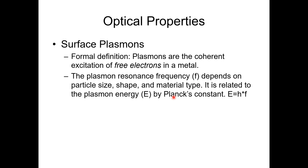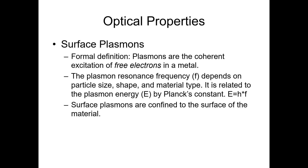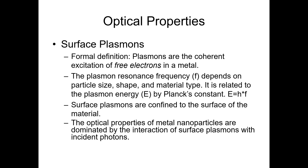The plasmon resonance frequency depends on particle size, shape, and material type, and it is related to the plasmon energy E according to Planck's relation: E = hf, where h is Planck's constant and f is the resonance frequency. Surface plasmons are confined to the surface of the materials, and they are particularly important in understanding the optical properties of metals, especially nanoparticles.